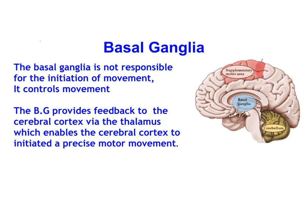So what does the basal ganglia do? The basal ganglia provides feedback to the cerebral cortex via the thalamus. Through the interplay between the basal ganglia and the cerebral cortex via the thalamus, it enables control, regulation, and precision of movement.